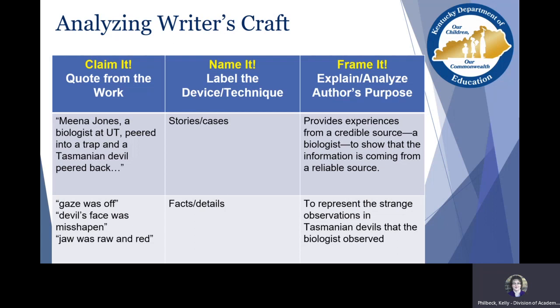We start off first by claiming: we take the quote from the work. One thing I highlighted was 'Mina Jones, a biologist at the University of Tasmania, peered into a trap and a Tasmanian devil peered back.' That's my quote I'm extracting — I'll put it in that first column. Then I think about what that is, using the language of writers. It's a good introductory step for students to underline or highlight on the text and then label it before they move to the chart.